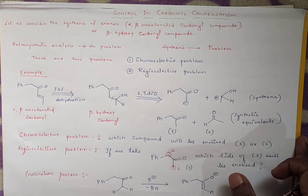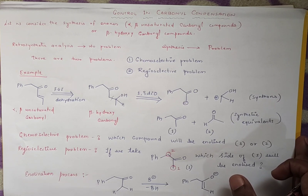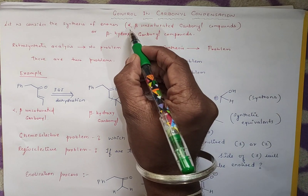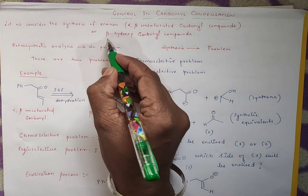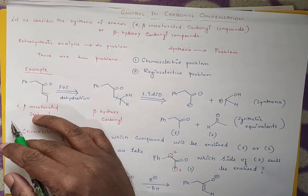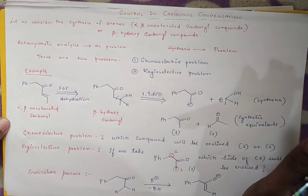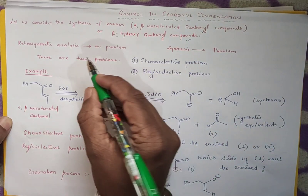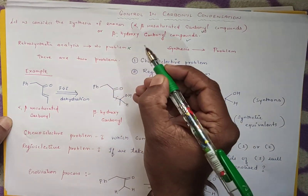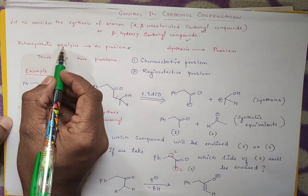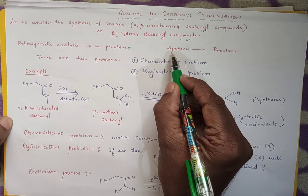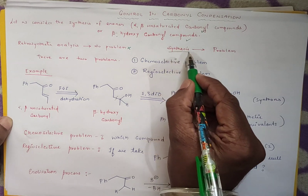We have discussed retrosynthetic analysis of 1,3-dicarbonyl compounds, including 1,3-dicarbonyl compounds, alpha-beta-unsaturated carbonyl compounds, and beta-hydroxy carbonyl compounds. When we do the retrosynthesis of alpha-beta-unsaturated carbonyl compounds or beta-hydroxy carbonyl compounds, there is no problem. But when we do the synthesis of these molecules, then there arises a problem.